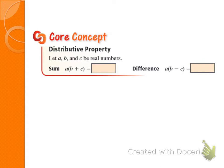The next one is the distributive property — fill it in at the top of page 2. It is not 'of equality'; it is just the distributive property. These are letters representing numbers. If I distribute A into the parentheses, I do A times B, which is AB, and then A times C, which is AC.